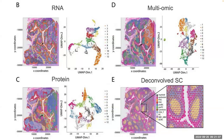In panel E, they compared it against a single-cell RNA dataset that they ran deconvolution on as a reference. There's a better correspondence visually in terms of cell types between panels D and E. The overall big picture is that you get more powerful results by doing multi-omic analyses than by leveraging just one type of information alone, and that's really built into these objects.